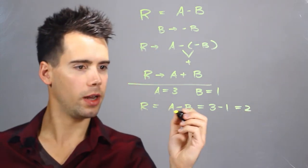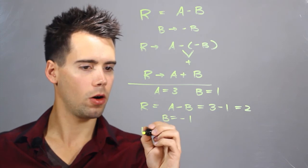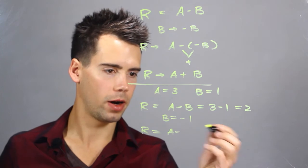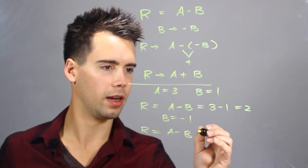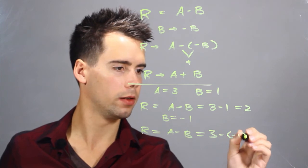Now when B goes to a negative 1, we find that R is equal to again A minus B, but now B is a negative 1, so it's equal to 3 minus negative 1.